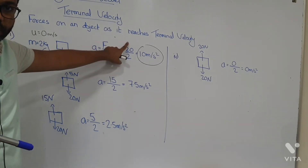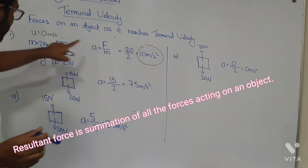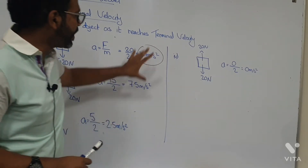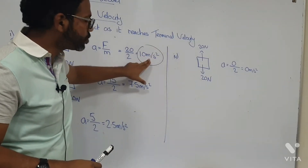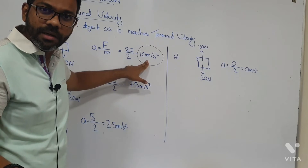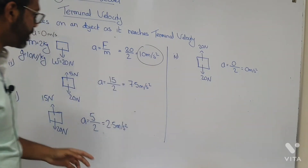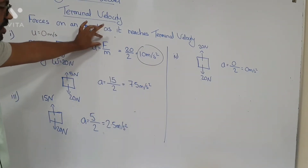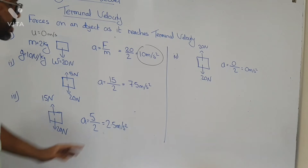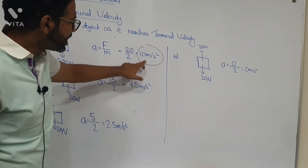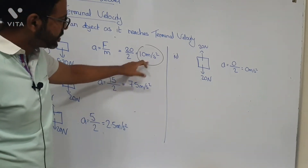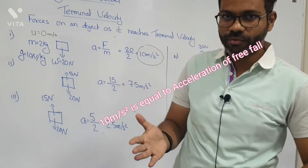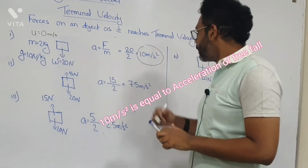So we can assume the resultant force on the object is the weight of the object, and the mass is 2 kg. From that we can find the acceleration to be 10 m/s². We know the formula: acceleration = resultant force divided by mass. Since the object is accelerating at 10 m/s², this is the acceleration of free fall.